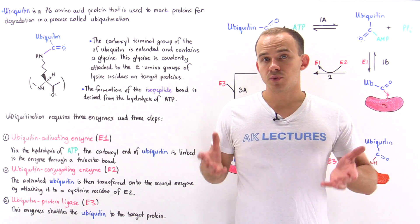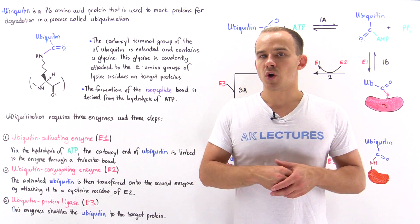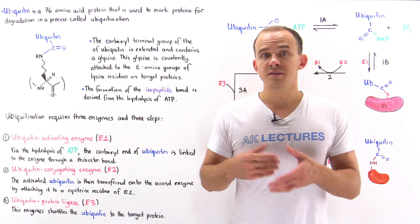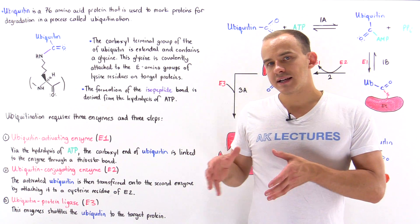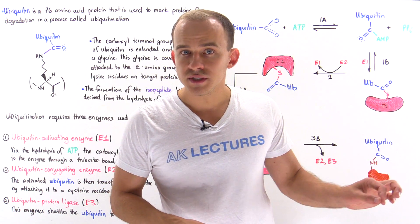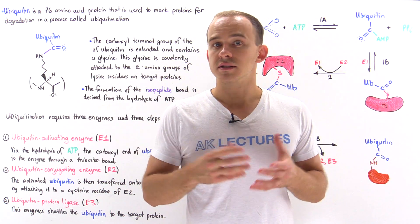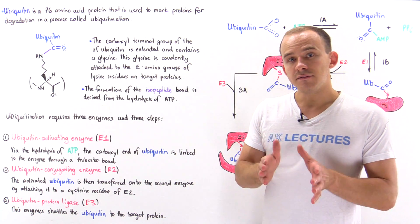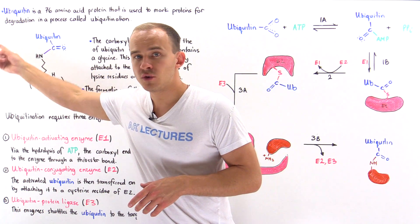Suppose a particular protein found inside our cell needs to be broken down into its constituent amino acids. Why? Well, suppose it was damaged. How exactly does the cell know to break down that particular damaged protein and leave all the other normal proteins untouched? The answer lies in a 76 amino acid polypeptide known as ubiquitin.